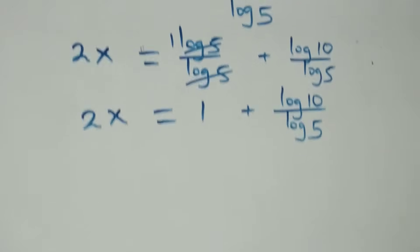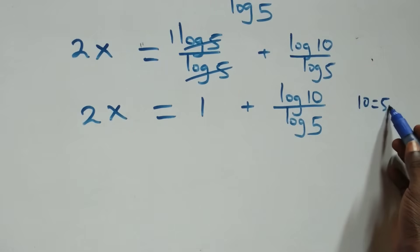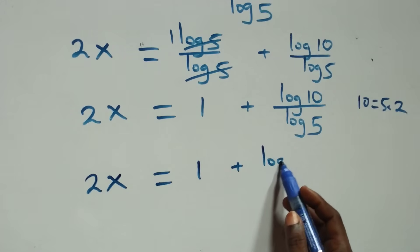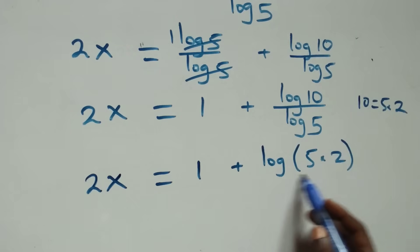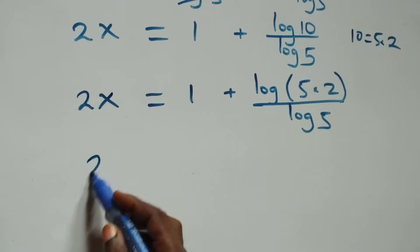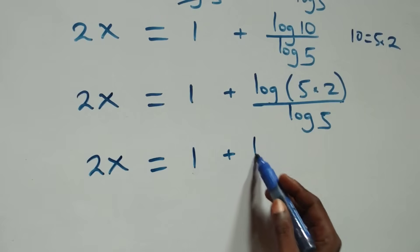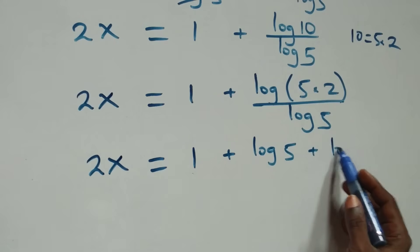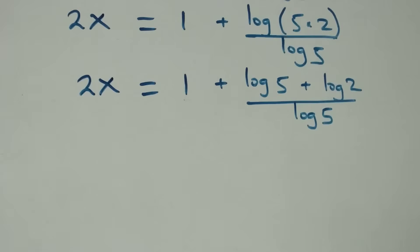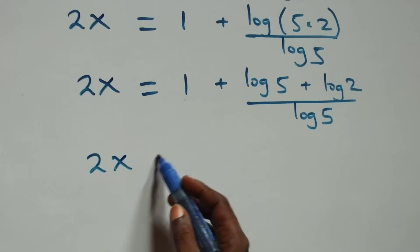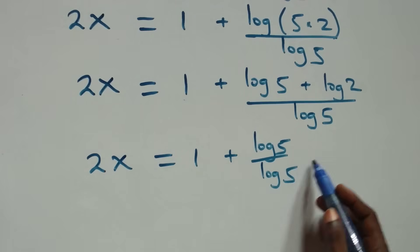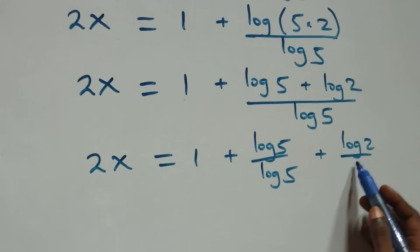This also follows from the law of logarithm. Also, 10 can be expressed as 5 times 2. So what we have becomes 2x equals to 1 plus log(5 times 2) over log 5. Applying the product rule, this becomes 2x equals to 1 plus log 5 plus log 2, all over log 5. We separate this into two fractions: 2x equals to 1 plus log 5 over log 5, plus log 2 over log 5.